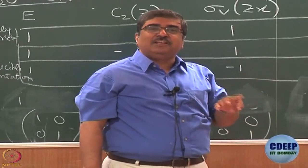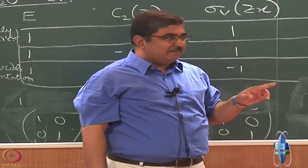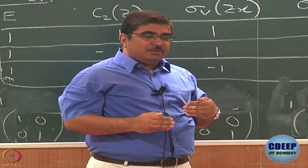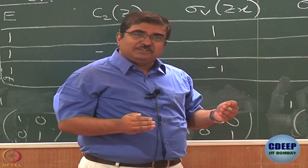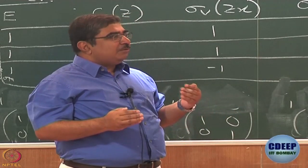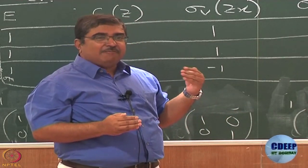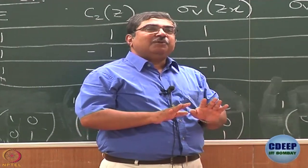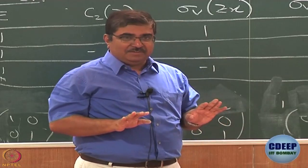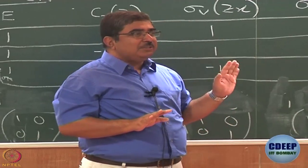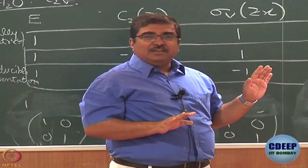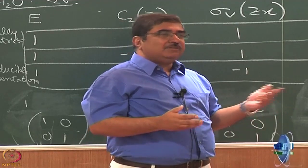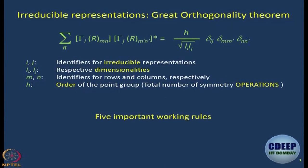Using the Great Orthogonality Theorem we arrive at what are called character tables — things that you have already used in this inorganic course last semester. In this course we don't have the scope to derive the Great Orthogonality Theorem, but we'll show you five consequences of it and from there learn how to derive character tables. Unless we do the derivation of one or two character tables, we don't understand what they mean — that's why we are discussing this.